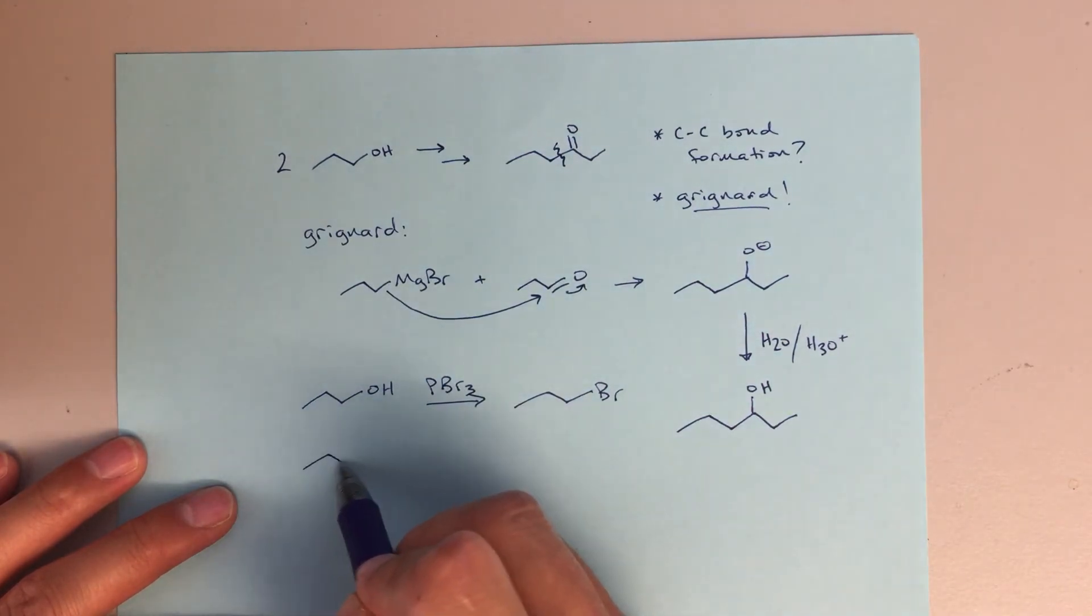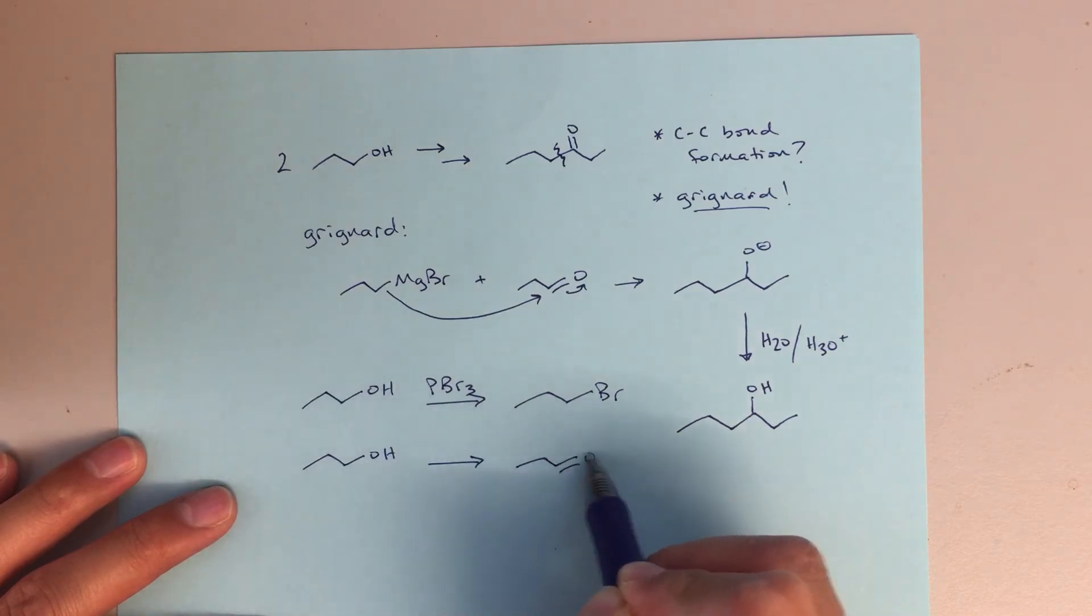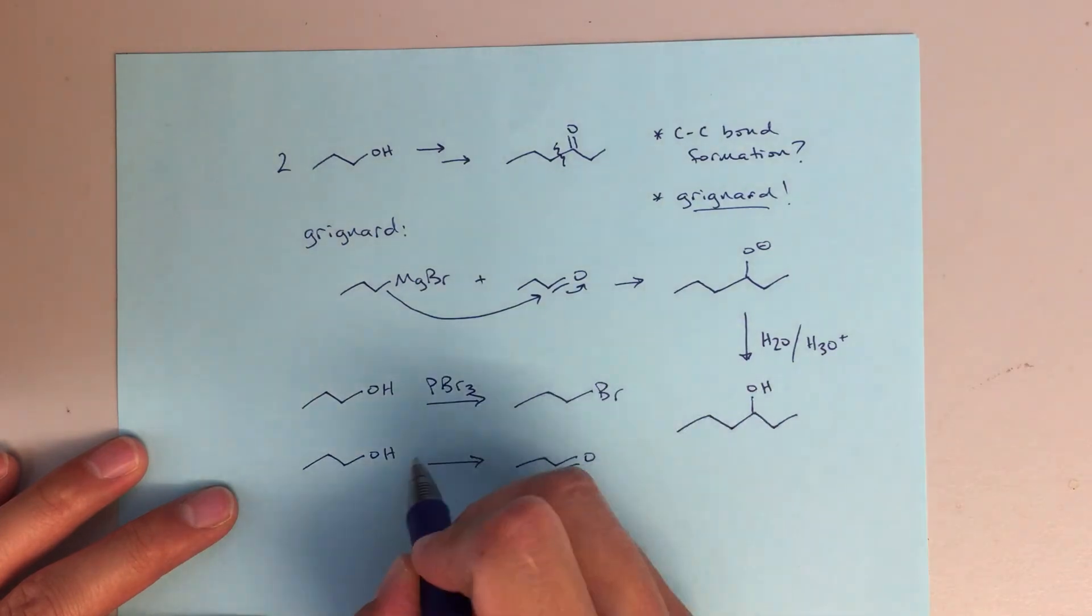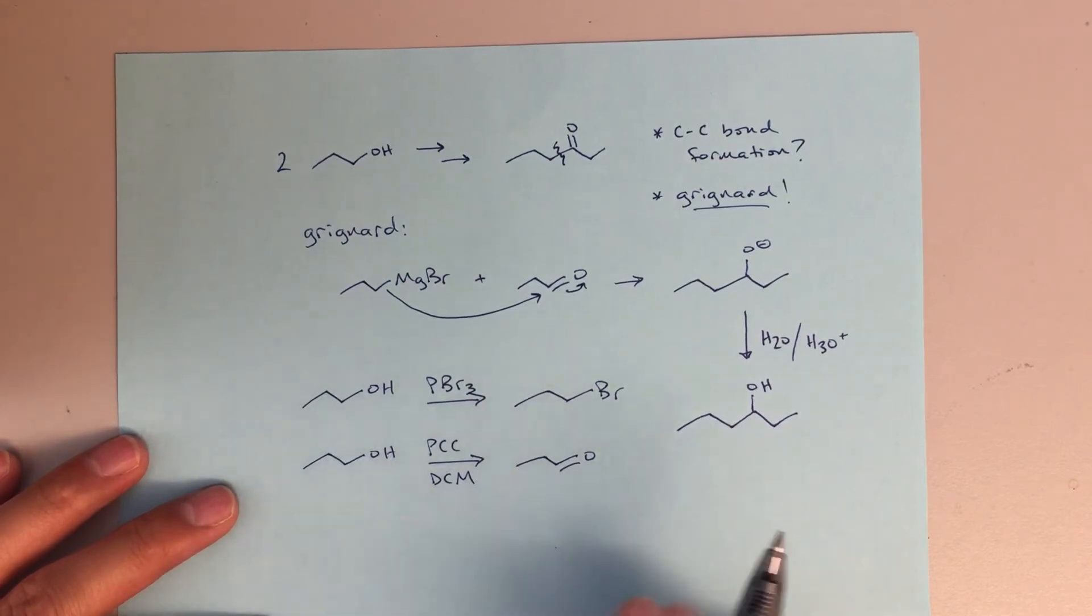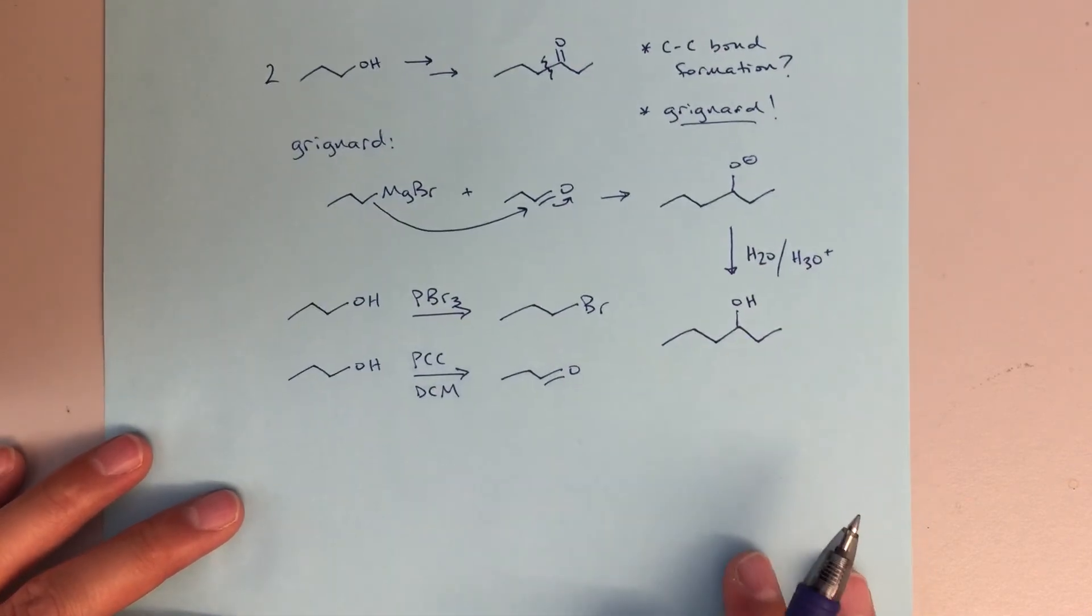The other piece that we're looking for is an aldehyde. And in this aldehyde case, we can use PCC in dichloromethane. In this case, we have to use PCC as opposed to chromic acid because the PCC will stop at the aldehyde. If we used chromic acid for this bottom reaction, we would end up with a carboxylic acid because it's a primary alcohol. So I want to use PCC in dichloromethane.